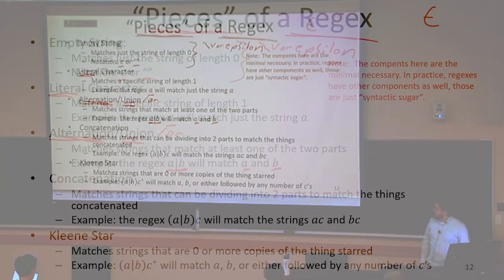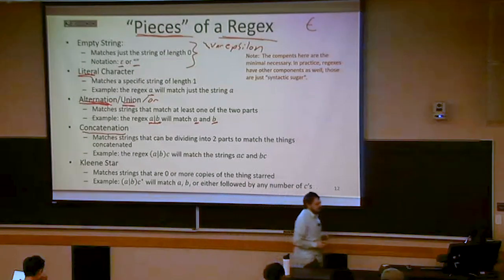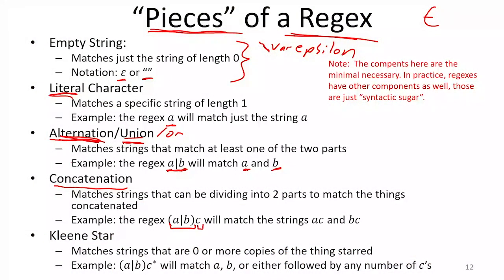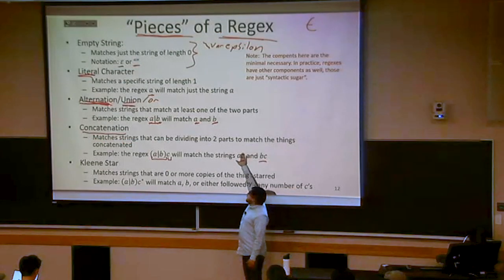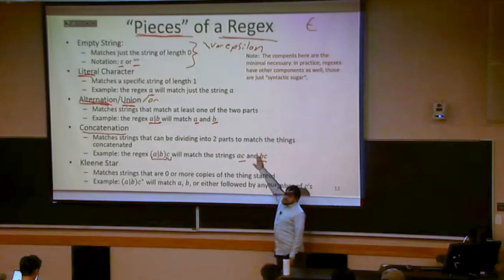We can also do concatenation: take two regular expressions and concatenate them, matching any string we can split into two pieces where the first piece matches the first regex and the second matches the second. For example, taking (A|B) concatenated with the literal C, this matches exactly two strings: AC (because A matches A|B, and C matches C) and BC (because B matches A|B).